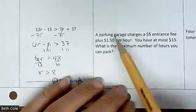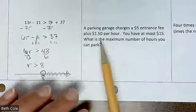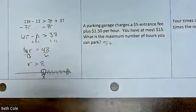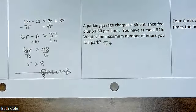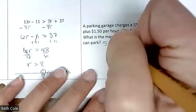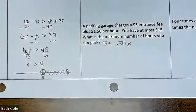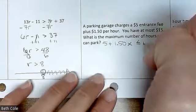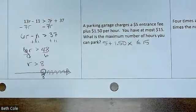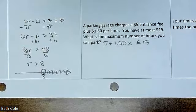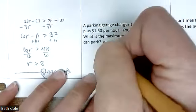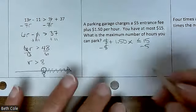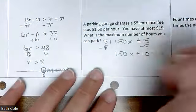For the sake of time, let's jump straight to this word problem. A parking garage charges $5 to get in. So it's going to be 5 plus — I want you guys to read — 1.50x. Good. And then you only have $15, so less than or equal to 15. Good — you can't spend more than what you have. And then we're going to work that out: minus 5, minus 5.